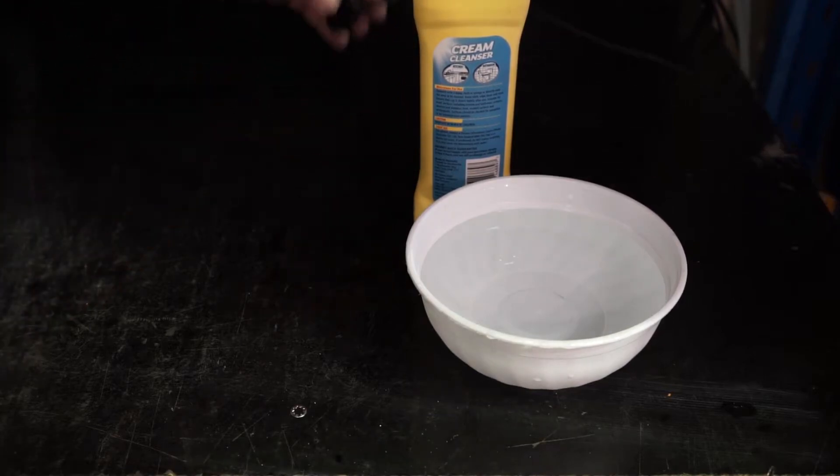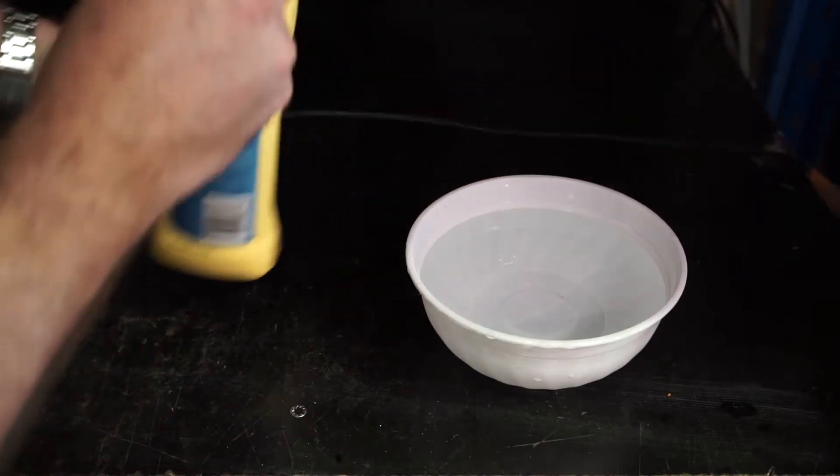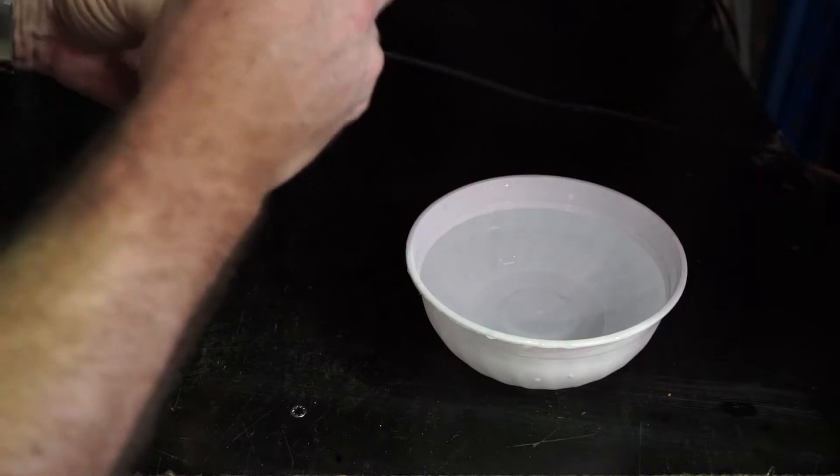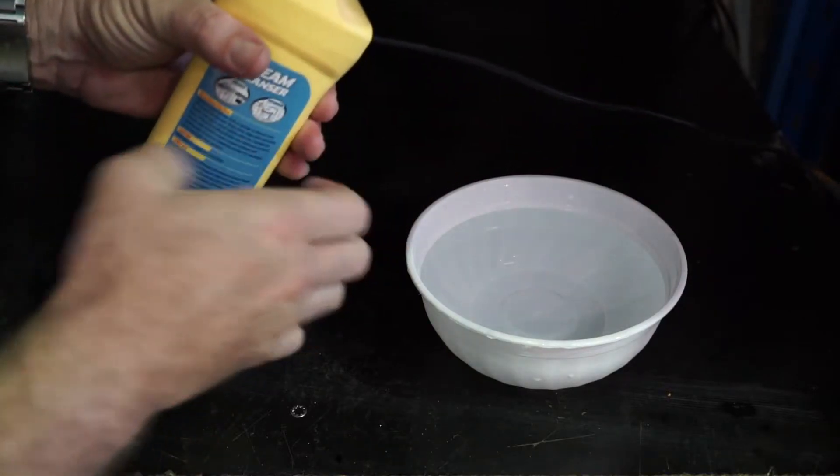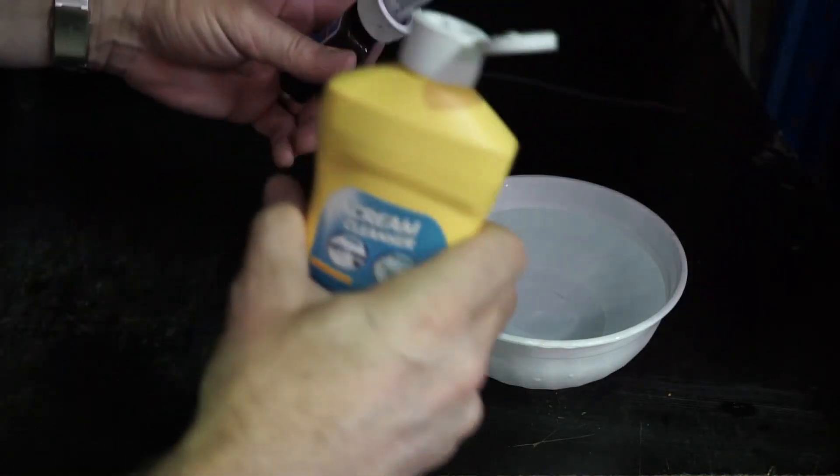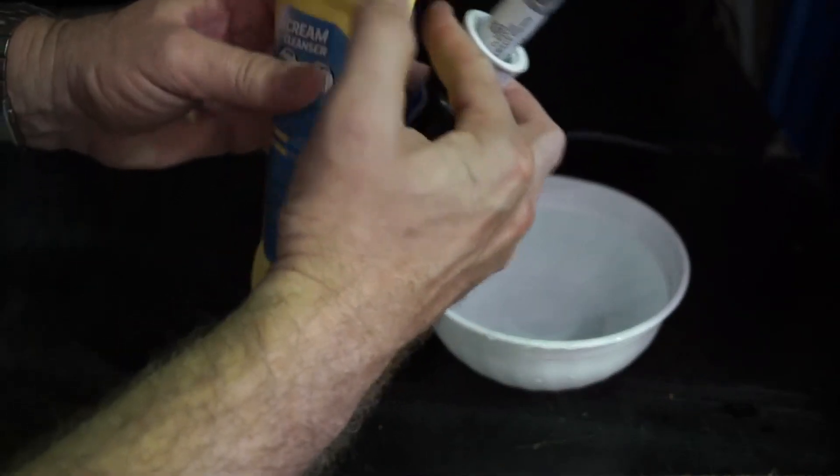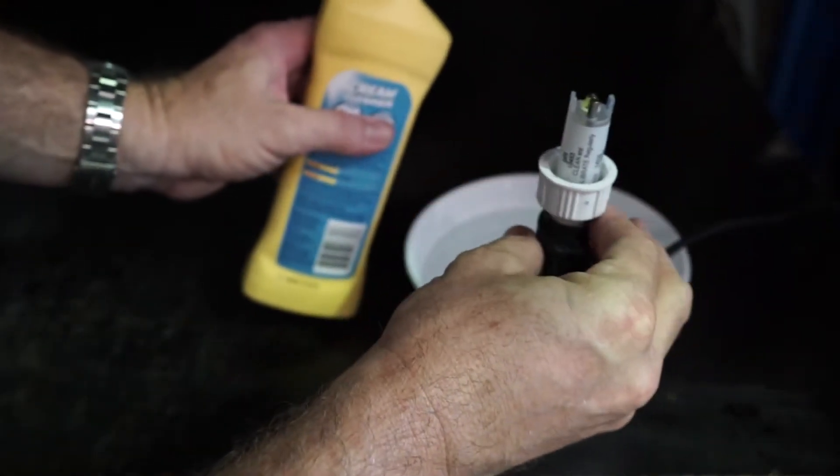After we've replaced our squeeze tube and done maintenance on our Astral Pool equilibrium chlorinator, we're going to clean and calibrate our probes. We do that with some cream cleanser.